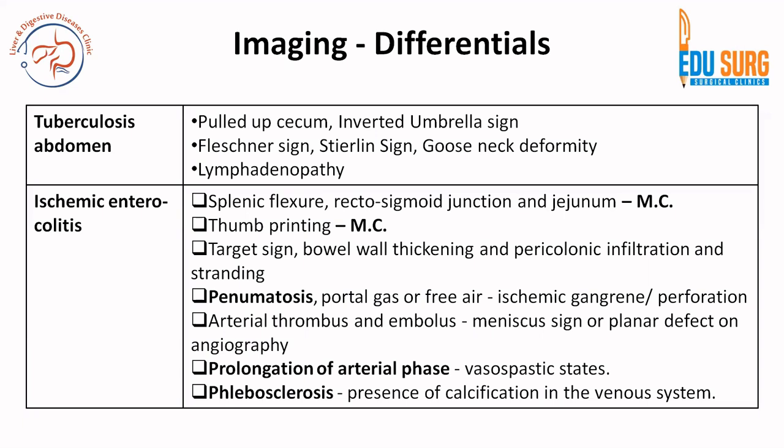If you have ischemic gangrene, you can have pneumatosis intestinalis, portal vein gas, or free air in cases of perforation. If the cause of ischemic enterocolitis is known, you can see a thrombus or embolus — known as a meniscus sign or a filling defect on angiography. Prolongation of arterial phase is seen in vasospastic states, and phlebosclerosis — the presence of calcification in the venous system — can also be present. So the key sites are splenic flexure, rectosigmoid junction, jejunum; then intestinal features, vascular features (vein or artery), and prolongation of arterial phase.